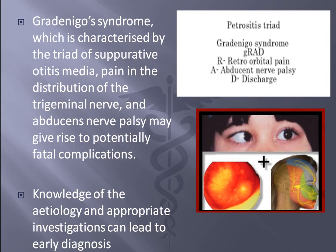Knowledge of the etiology and appropriate investigations can lead to early diagnosis of Gradinego syndrome. There is a mnemonic to remember this — it is associated with petrositis. The mnemonic is G-RAD: G for Gradinego, R for retro-orbital pain, A for abducent nerve palsy, and D for discharge.